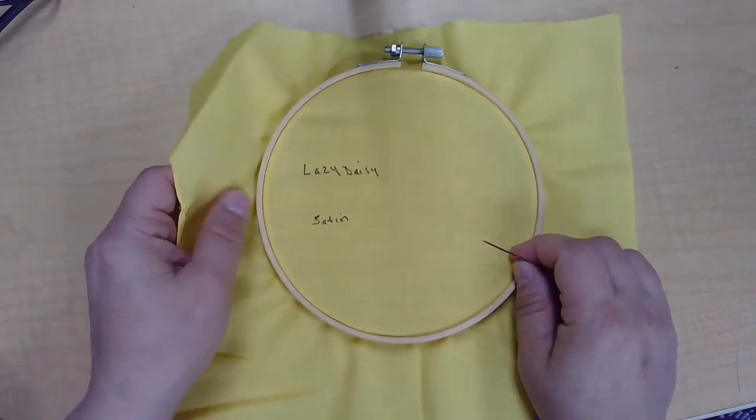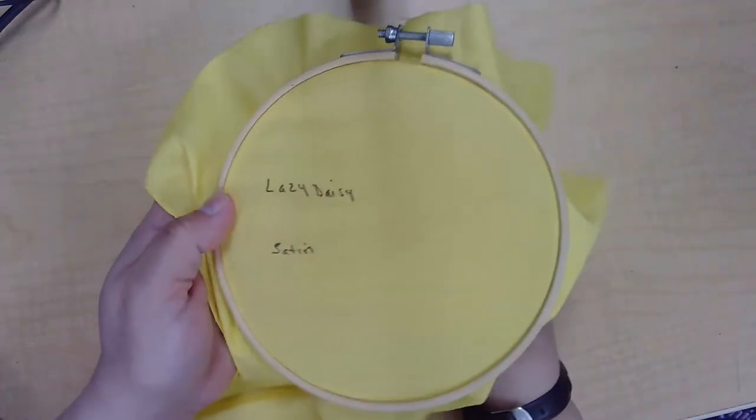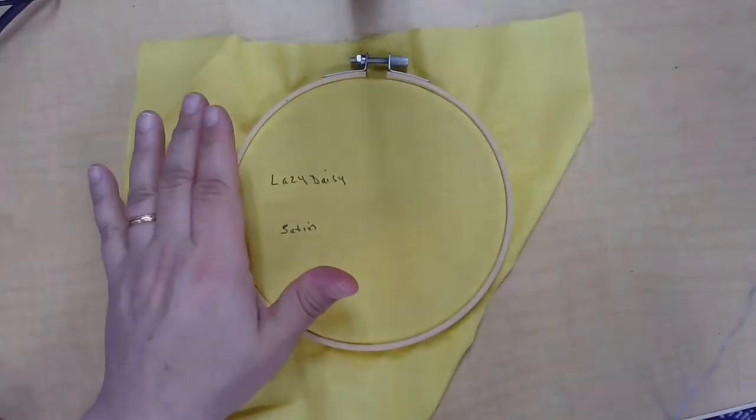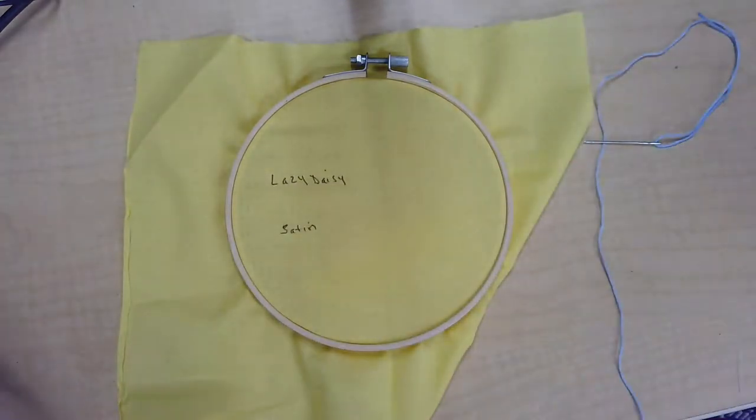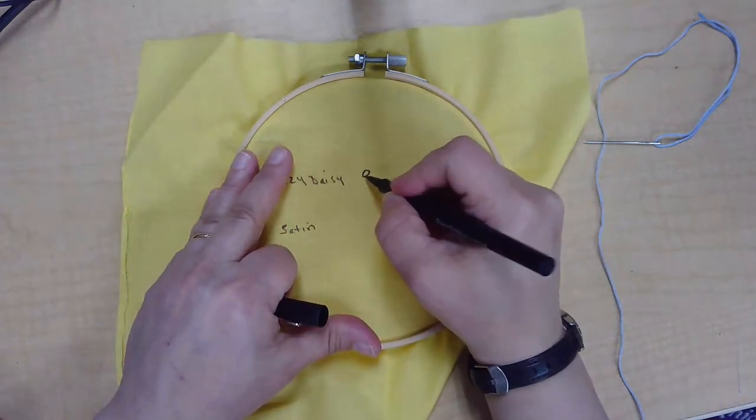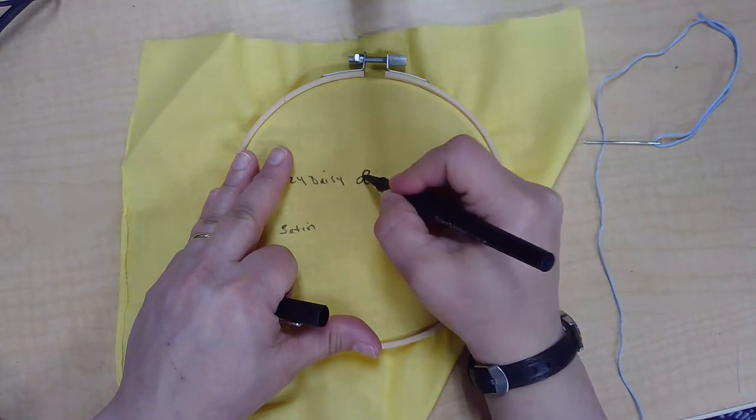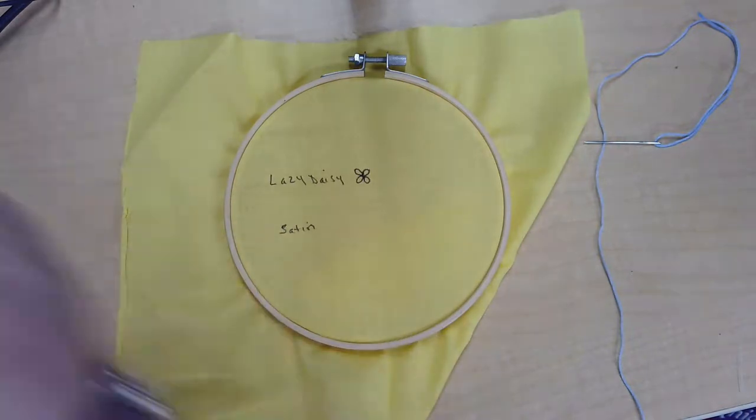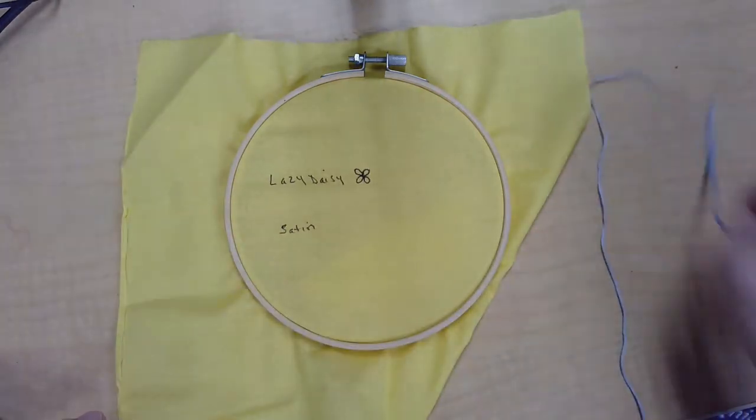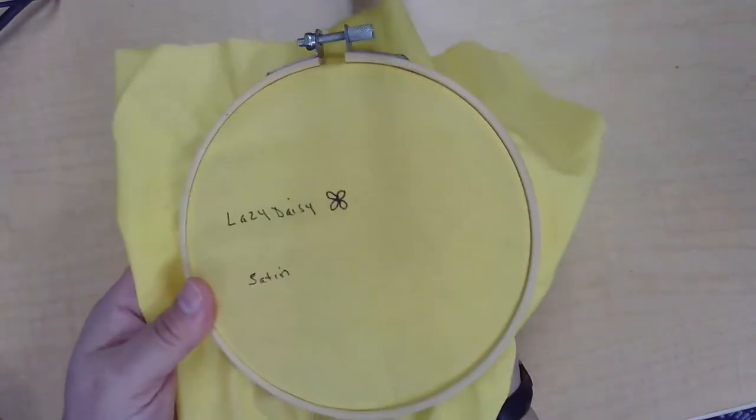The Lazy Daisy is basically using the chain stitch that you learned earlier, but to make a flower. To make it easier to see what I'm doing, I'm going to outline a four petal flower so you can see where I'm going and then I'll do one freehand. When you start you might want to outline some in pencil. I'm using a marker here to make it easier in the video to see.